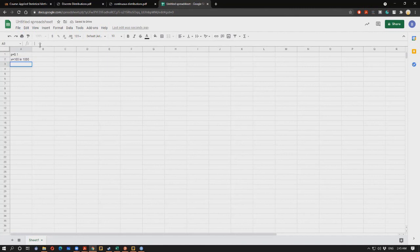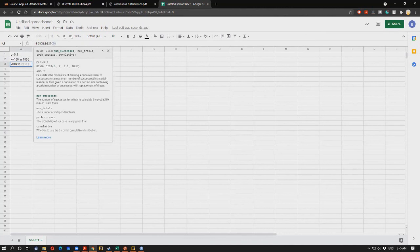To find probabilities related to binomial random variables, we use the BINOMDIST function. Number of successes is 100. Number of trials is 1,000. Probability of success is 0.1. For cumulative, we are going to put false. If we put true, we'll get the CDF function. If we put false, we'll get the PMF for binomial distribution.